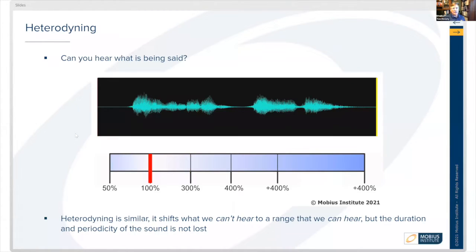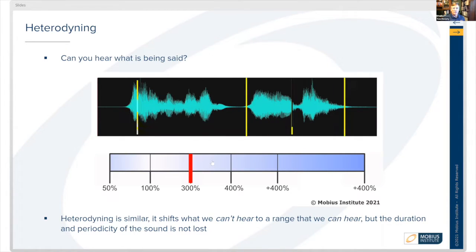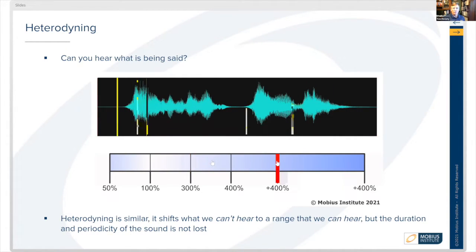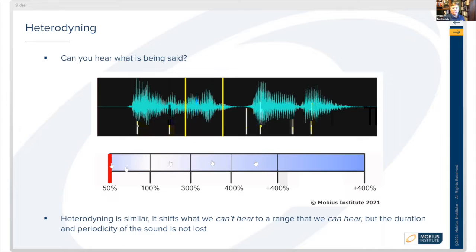What if we made it a bit higher? Or even higher. That one actually hurts my ears. You can also shift it downward. So, heterodyning is similar to this. It allows us to shift the frequencies that we're listening to from something that is hard for us or difficult or impossible for us to hear to something that we can hear.